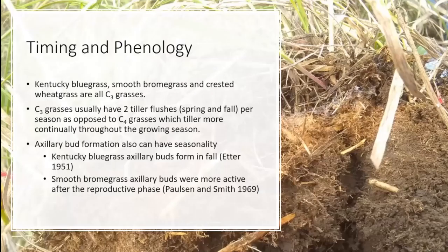One other thing before I move on is phenology. Most C3 grasses have a tendency to produce two cohorts of new tillers every year — one in the spring, one in the fall — while C4 grasses tend to have a more consistent tillering pattern across the season. Remember these two points: Kentucky bluegrass axillary buds form in the fall, and smooth brome grass axillary buds become more active after the reproductive phase — these help explain things I'll discuss later.